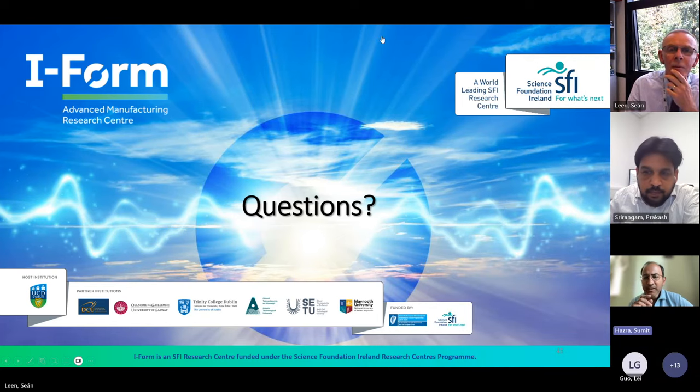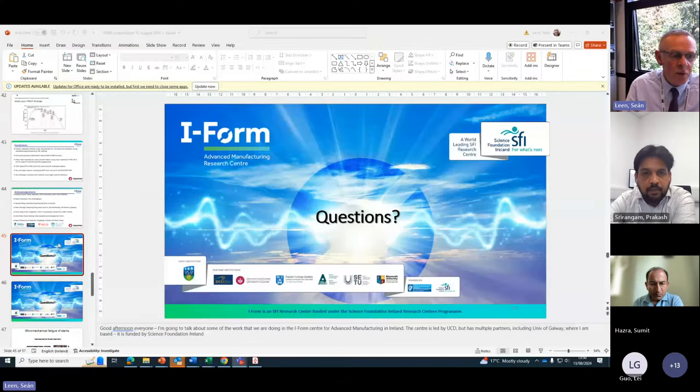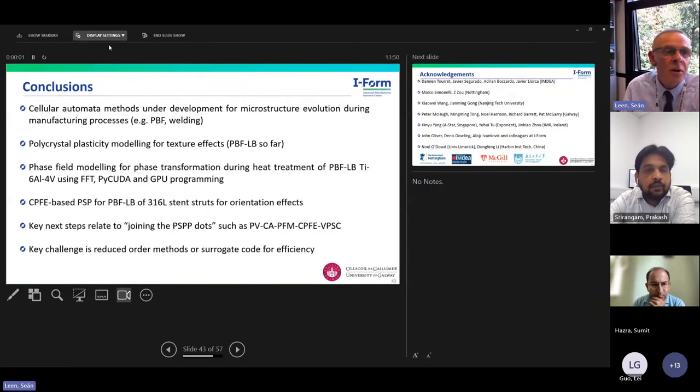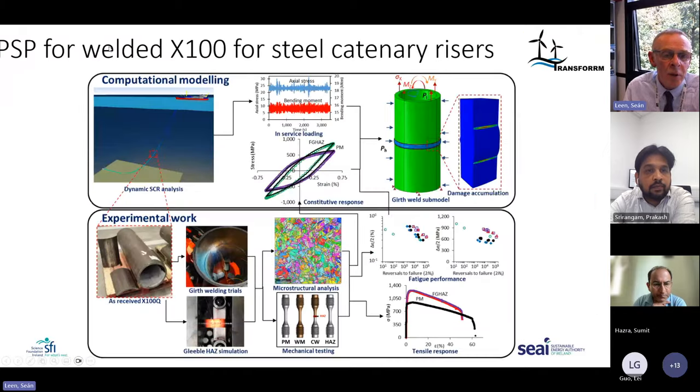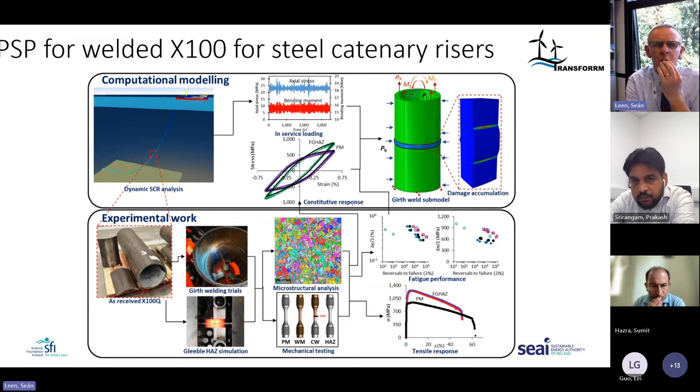Sean, I was wondering if you could summarise the offshore work, because we're interested in decommissioning of offshore wind turbines and commissioning of new ones with steel structures. Absolutely. Let me go back to that slide. This shows some work we did for X100 welded steel for continuous risers. For offshore structures, it's fairly well known that there is a size effect for steel plate — as plates get thicker for larger wind turbines and monopiles, fatigue strength reduces because of this size effect.